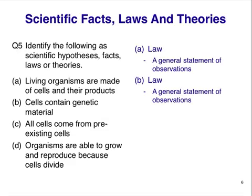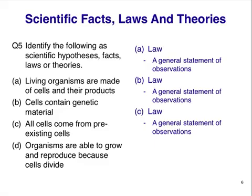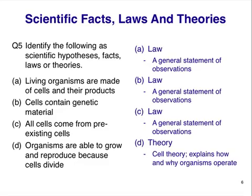Actually, the first three answers are all laws. In the physical sciences, laws are often written as mathematical equations, but in the life sciences, laws are often written as statements and not equations. In these cases, answers A, B, and C are generalized statements — meaning they apply to all cellular organisms — of repeated observations. They state something that is true but without any explanation of how or why, so they cannot be theories as written. The last statement is a theory, called the cell theory of biology. It is built on and incorporates statements like the first three. If you look carefully, you can see that D includes or implies the other three: organisms grow because cells divide, so cells must contain genetic material, and new cells are formed from pre-existing ones.